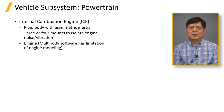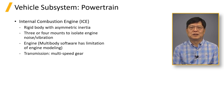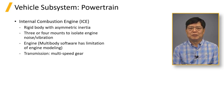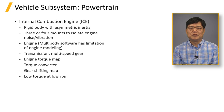Multibody dynamic software has limited capabilities for modeling engine and transmission details. One-dimensional modeling software, where the powertrain element can be co-simulated with a full vehicle model, can predict powertrain-related performance. One workaround to represent engine and transmission physics in multibody dynamic software is to use a steady-state engine torque map, torque converter curves, and gear shifting maps.